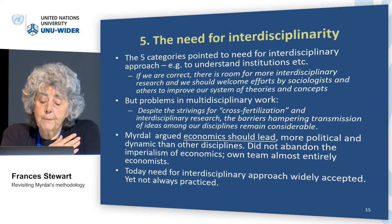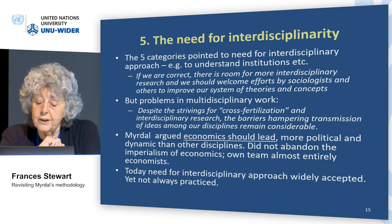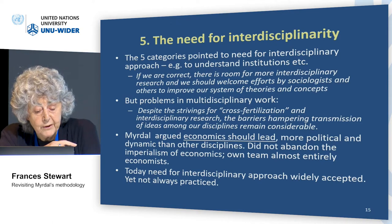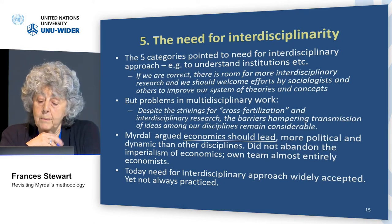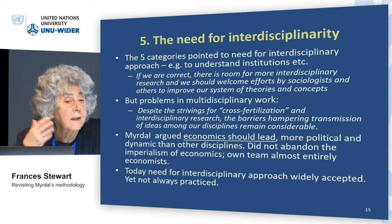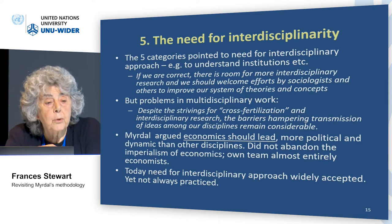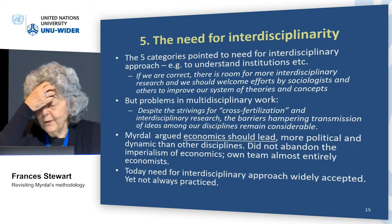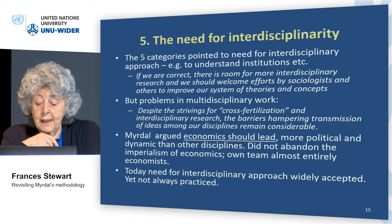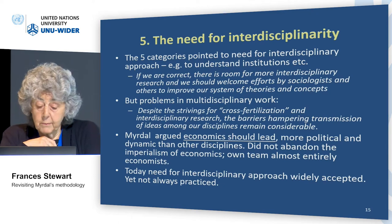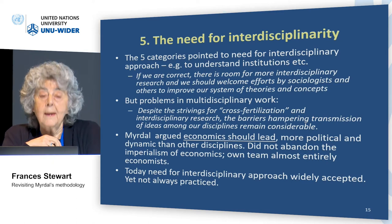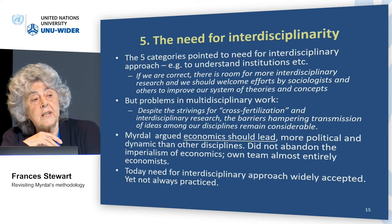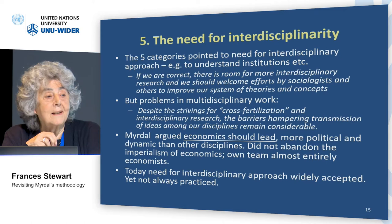He talked about the need for multidisciplinarity. So if we're correct about the five factors, then we need more interdisciplinary research, and we should welcome efforts by sociologists and others to improve our system of theories and concepts. But he did see that there were some problems in multidisciplinary work, which we all recognize remain problems. And he did argue that economics should remain in the lead — he felt that economists were more political and more dynamic than other disciplines. So he didn't abandon the imperialism of economics, and his own team was almost entirely consisting of economists. I would say today we totally recognize the need for interdisciplinarity, but it remains true that economics remains king.